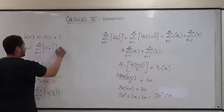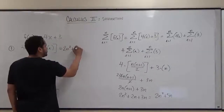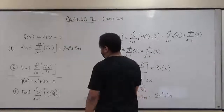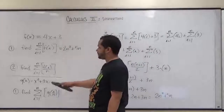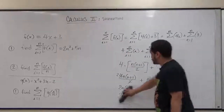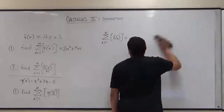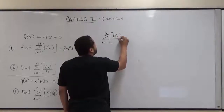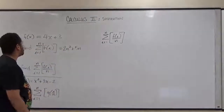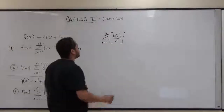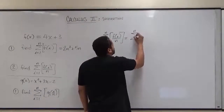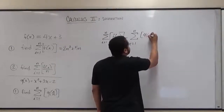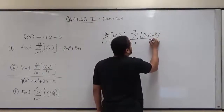That's the solution for the first one. Now let's move on to the second problem, which is a little more complicated because our function input is divided by an extra term of n. So instead of just f(i), we're going to have f(i/n). Inserting i into f gives us the summation from 1 to n of 4i plus 3, all divided by n.